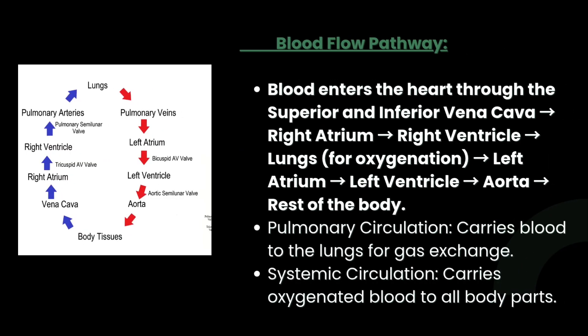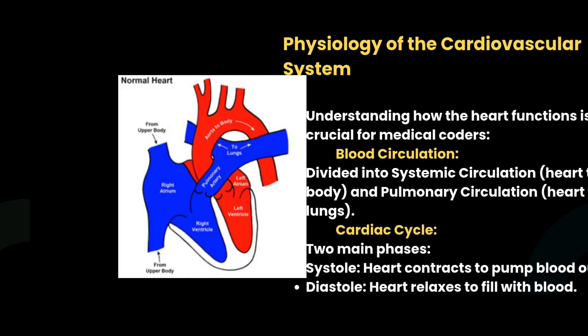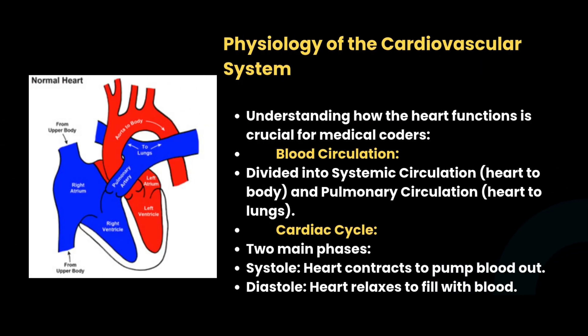The third component is the blood flow pathway. Blood enters the heart through the superior and inferior vena cava, flows to the right atrium, then right ventricle, then to the lungs for oxygenation, then to the left atrium, left ventricle, and out through the aorta to the rest of the body. Pulmonary circulation carries blood to the lungs for gas exchange.